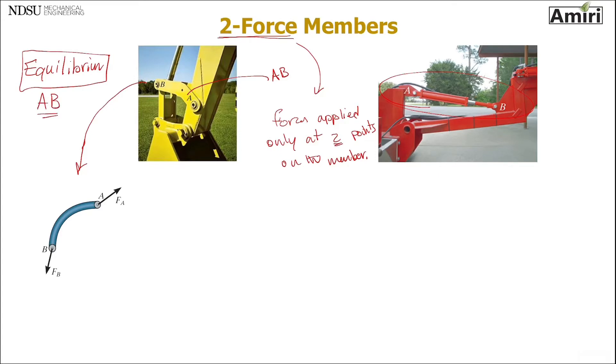If you remember, equilibrium meaning it shouldn't have any translation or any rotation. Summation of forces should be zero. Summation of moments should be zero as well. So by looking at it, to satisfy the force equilibrium, FA and FB, they should be equal.